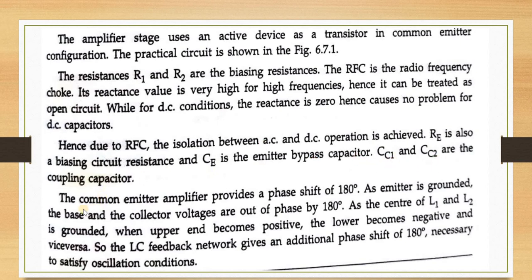RE is the biasing circuit resistance; CE is the emitter bypass capacitor; CC1 and CC2 are the coupling capacitors. The common-emitter amplifier provides a phase shift of 180 degrees — the base and collector voltages are out of phase by 180 degrees. As the center tap of L1 and L2 is grounded, when the upper end is positive, the lower end becomes negative and vice versa.